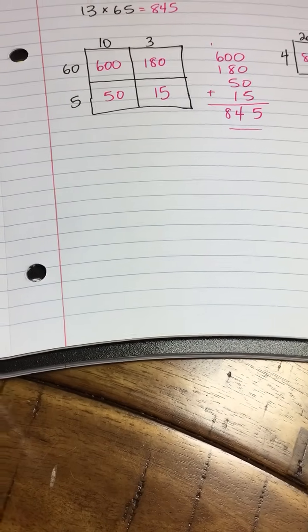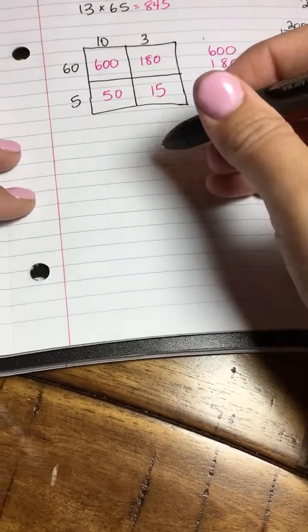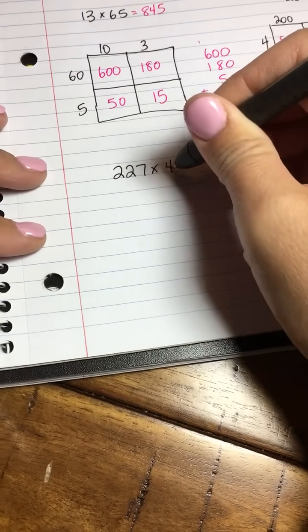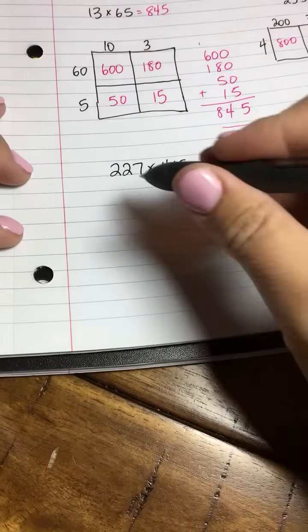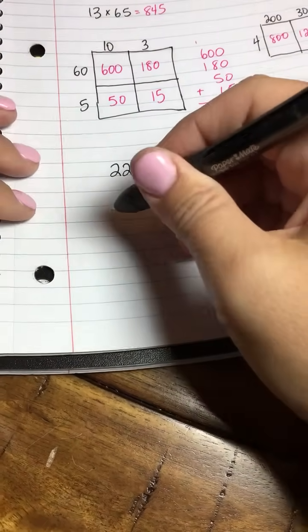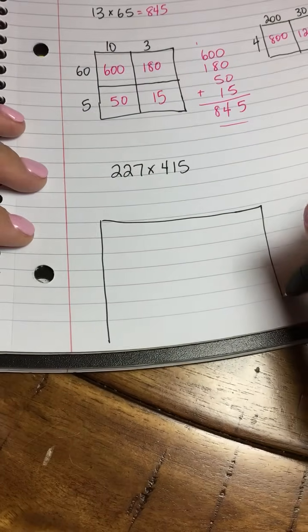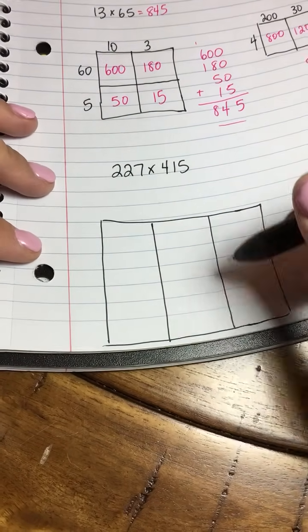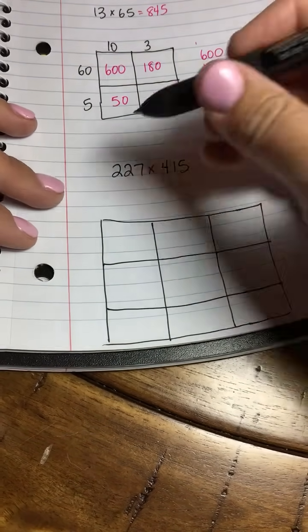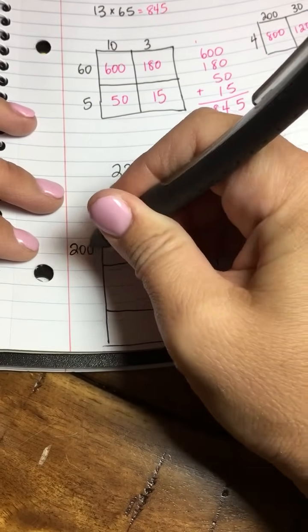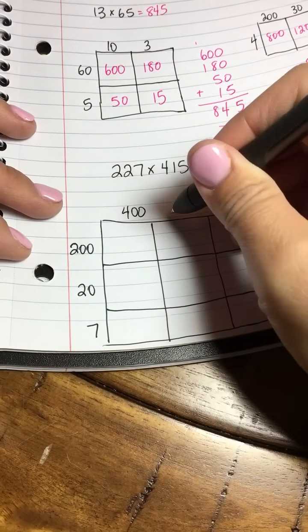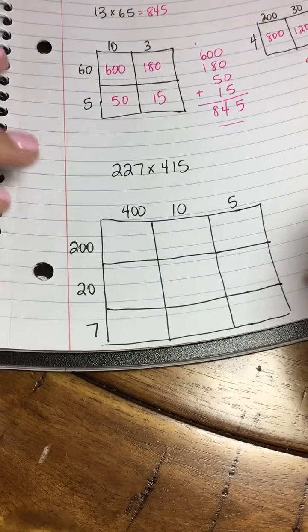Now suppose we have a really big equation that is three digits times three digits. Let's suppose we have 227 times 415. In this example, we need a three-by-three box. It has to have three rows and three columns because that's how many digits we have. Now let's write our expanded form of our numbers. 227—let's do that one over here this time. On the top we'll do 415. There's the expanded form of both of our factors.